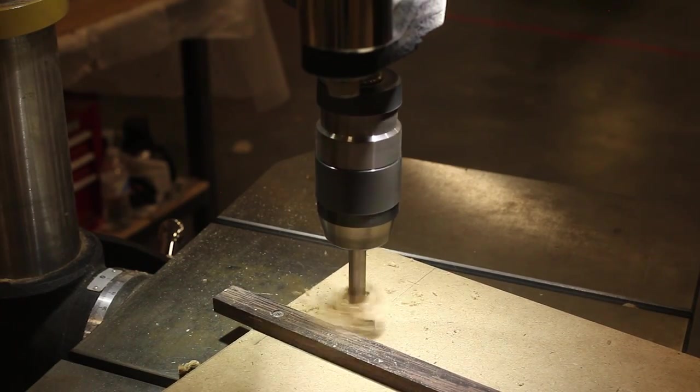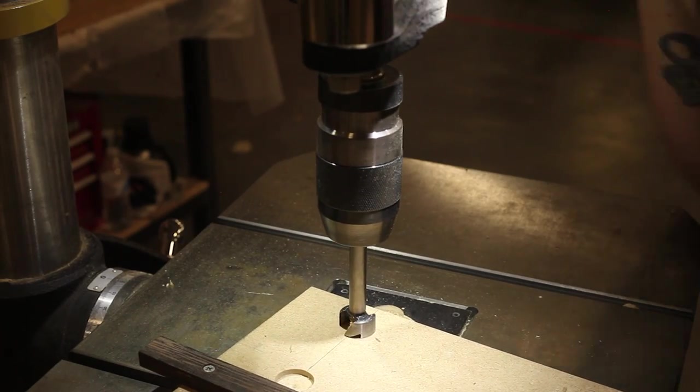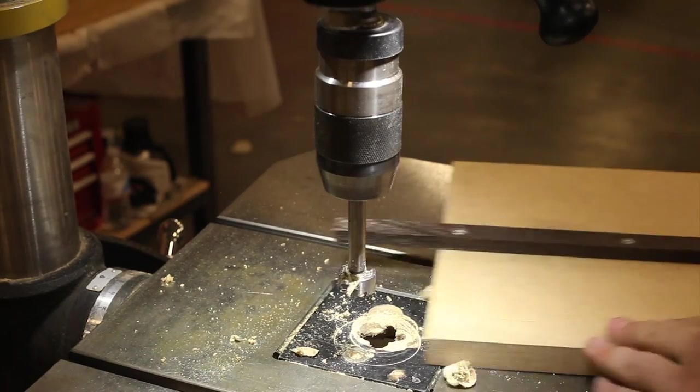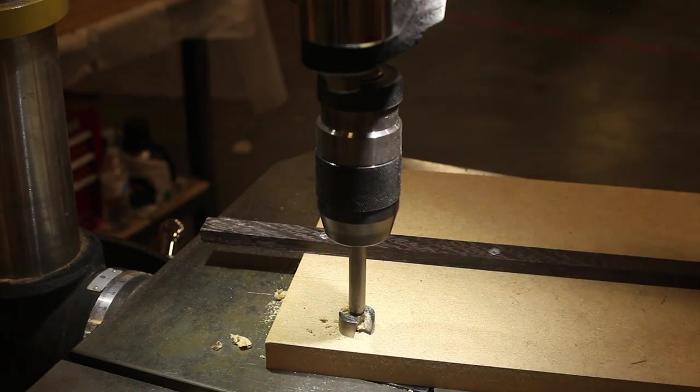And the same thing on the bottom. So start with a Forstner bit to create the countersink for the carriage bolts. And you want to use the bigger Forstner bit first because if you were to drill out the small hole, that little pin in the middle of the Forstner bit won't locate the hole.